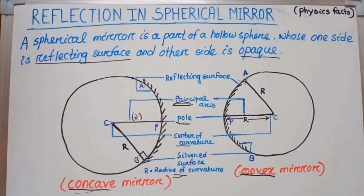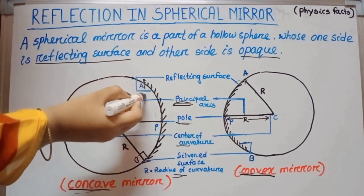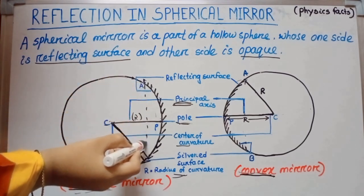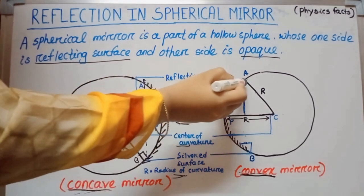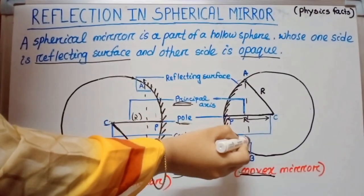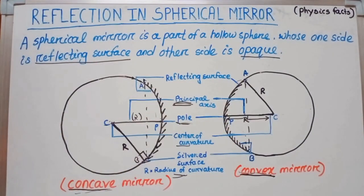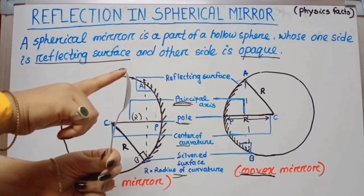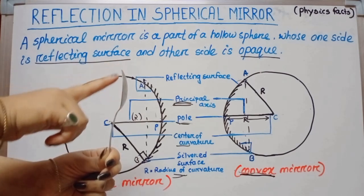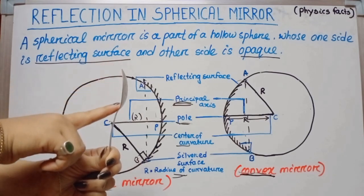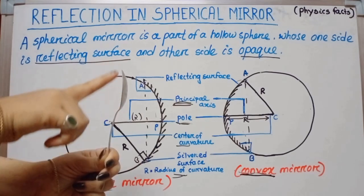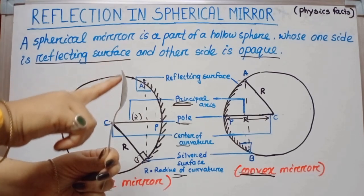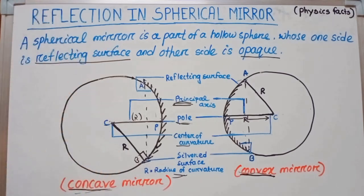The line joining the two end parts of the mirror — that means the line joining points A and B — is called the aperture of the mirror.